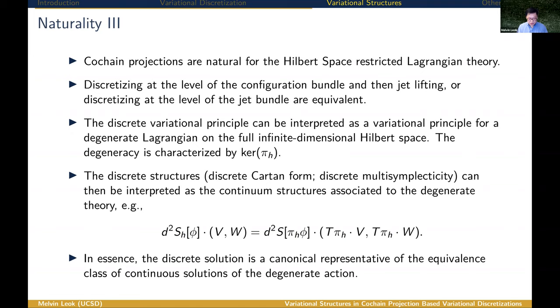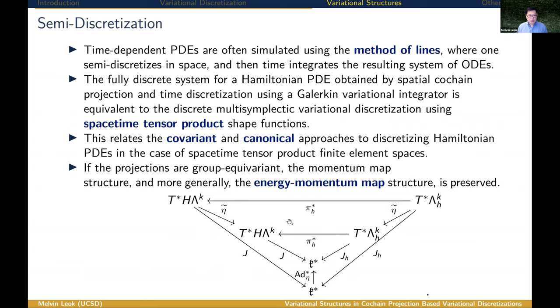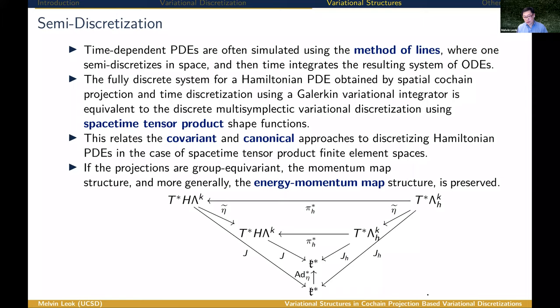This theory extends to semi-discretization, the usual setting for finite element exterior calculus. The take-home message is that discretizing in space using FEEC and discretizing in time using a Galerkin variational integrator is equivalent to a discrete multi-symplectic variational discretization using shape functions that are tensor products of spatial FEEC spaces with the interpolants used in the Galerkin variational integrator. This relates in a very precise sense the covariant and canonical perspectives on Lagrangian Hamiltonian PDEs. If the projections are group equivariant, then not only is the momentum map structure preserved, but the energy-momentum map structure is also preserved.